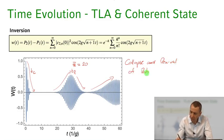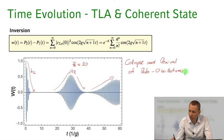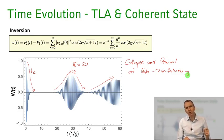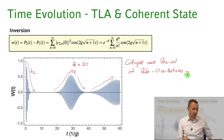This collapse and revival is a genuinely new feature that we only find in the quantized light field description — it would not occur in any semi-classical treatment. So now let's try to estimate the collapse time and the revival time, and then understand why in the classical limit these collapse and revivals actually vanish.